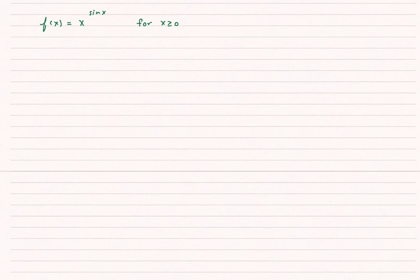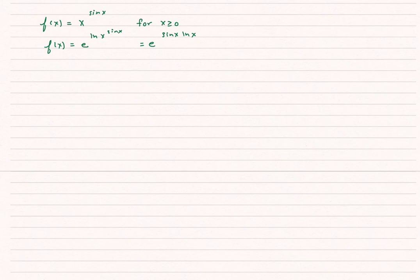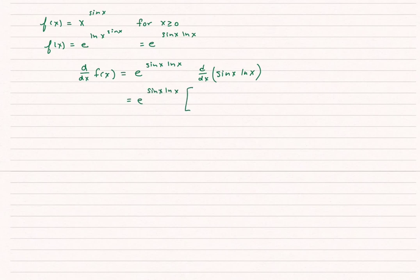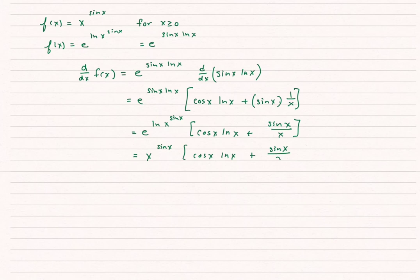Now let's find the derivative of x raised to the sine of x. The trick is to rewrite it as e to the natural log of x to the sine of x, then use the power rule of logarithms. Taking the derivative gives e to the sine(x)·ln(x) times the derivative of sine(x)·ln(x). Using the product rule: derivative of sine x is cosine x times ln(x), plus sine(x) times 1 over x. Rewriting the exponential back, the final answer is x to the sine x times the quantity cosine(x)·ln(x) plus sine(x)/x.